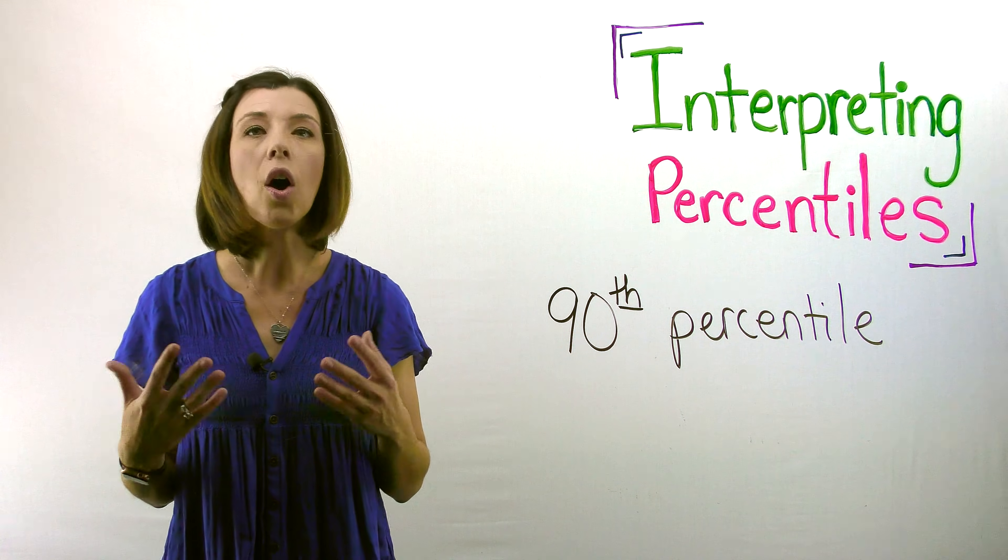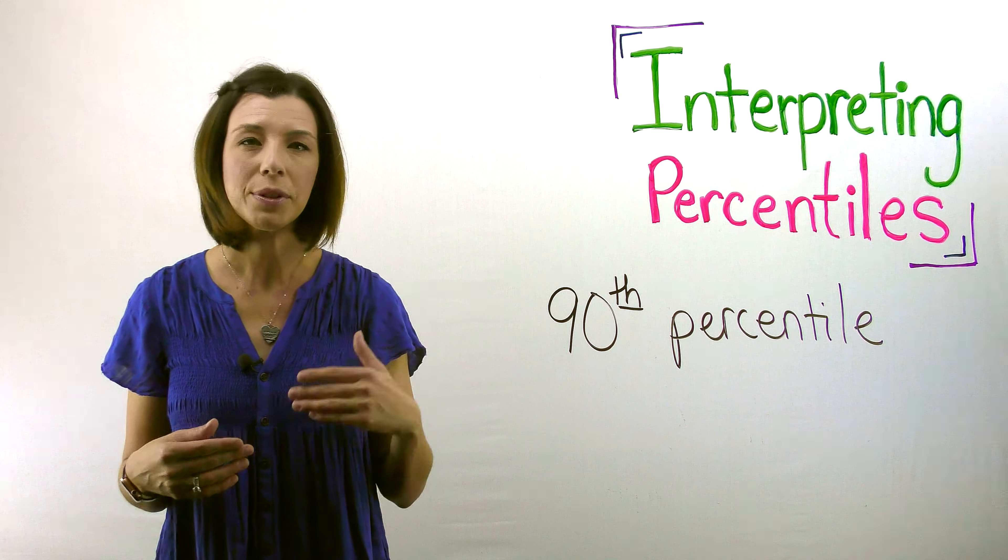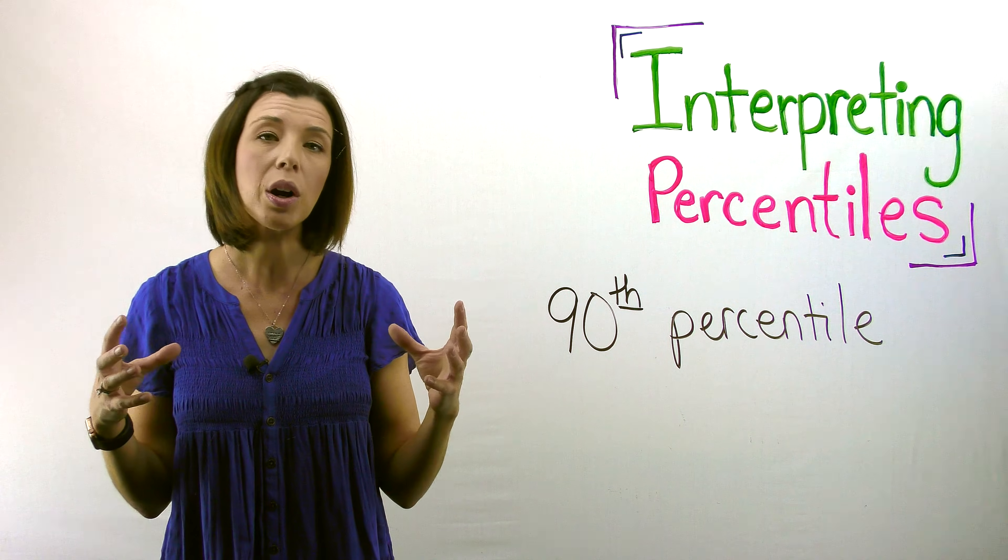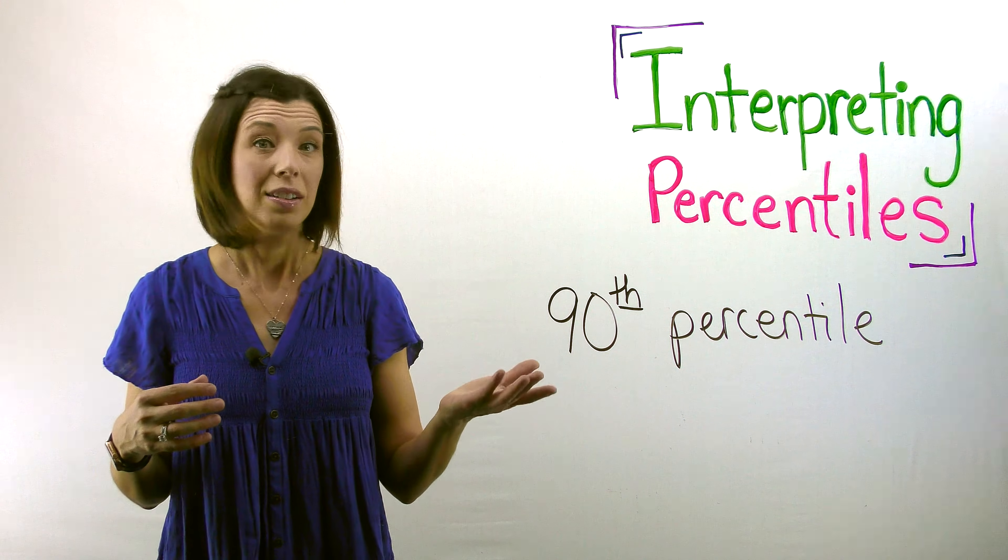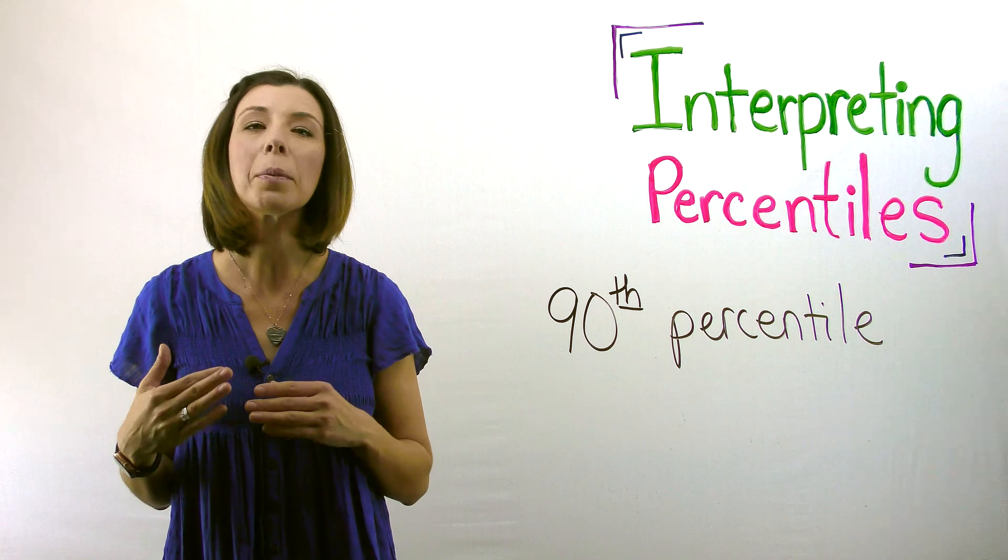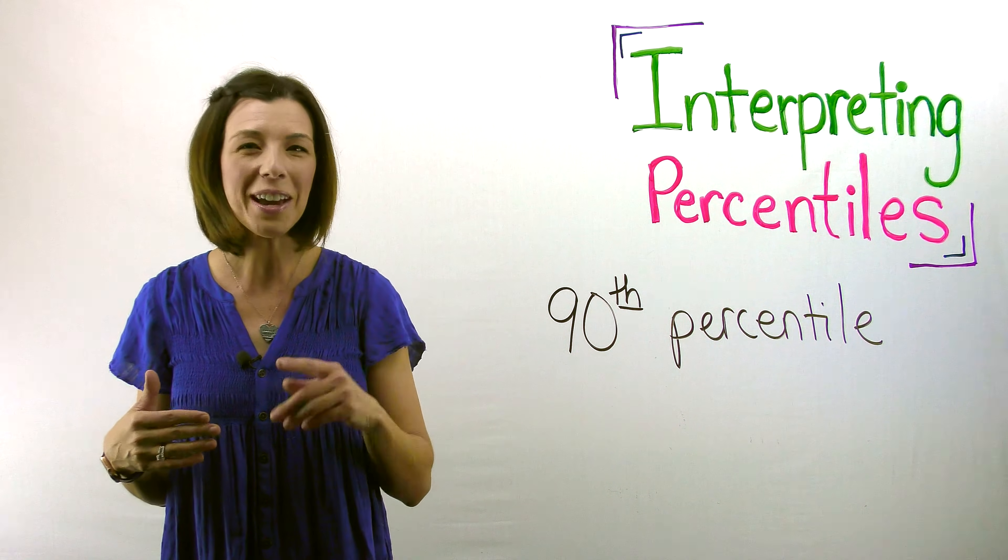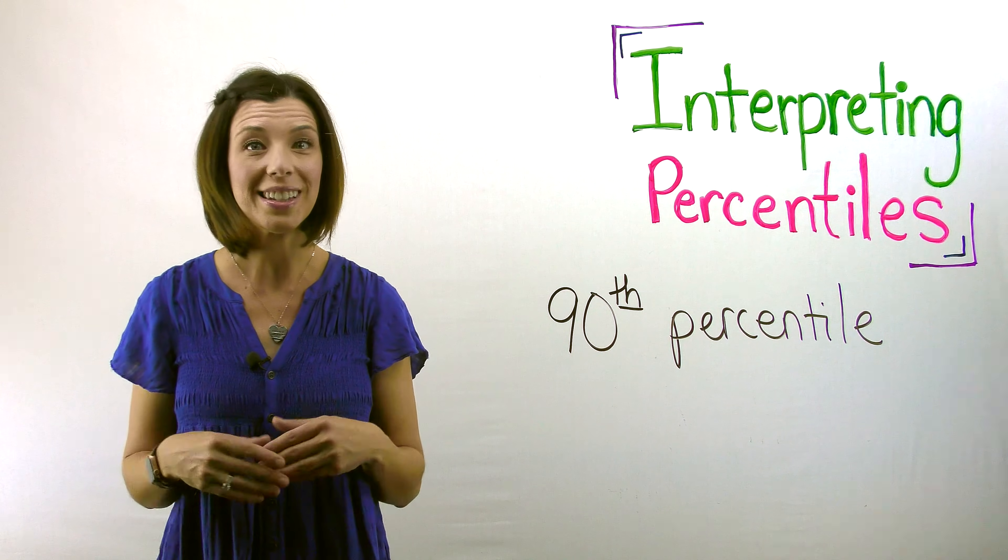Let's take a look at an honors math class in high school. And if we're looking at a 90th percentile score and the scores are only being reflected in that honors math class, they're doing really well. They're scoring better than 90% of their peers in that honors math class.